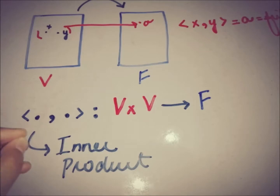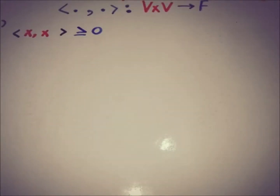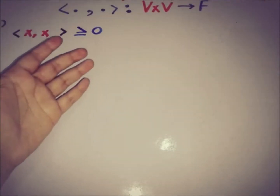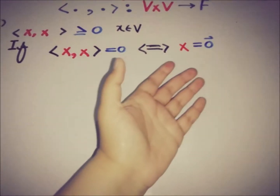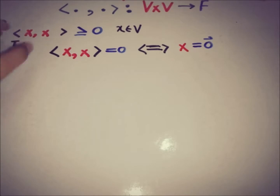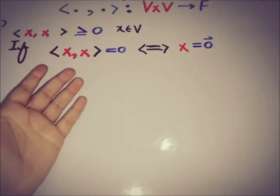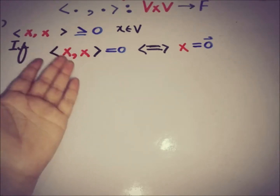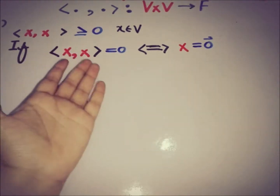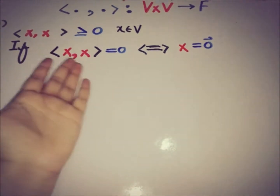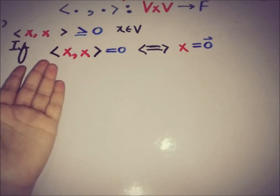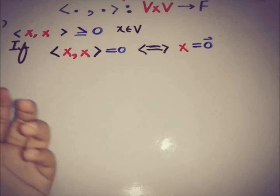This function is said to be an inner product if it satisfies four basic properties. The first property is that the inner product of any element with itself must be greater than or equal to zero. If the inner product equals zero, then the element must equal the zero vector, since elements are taken from the linear vector space.